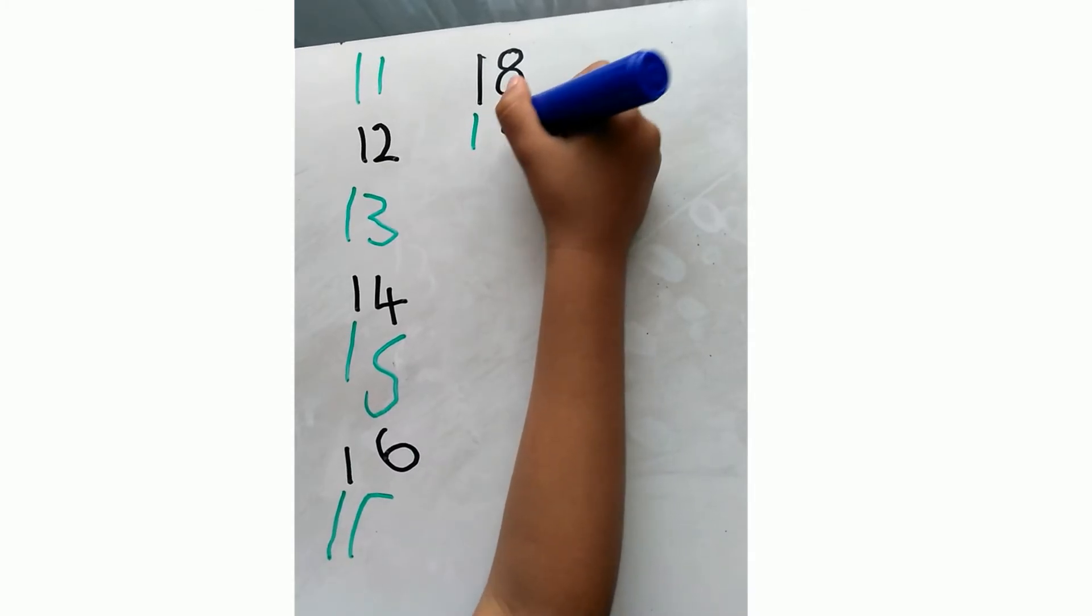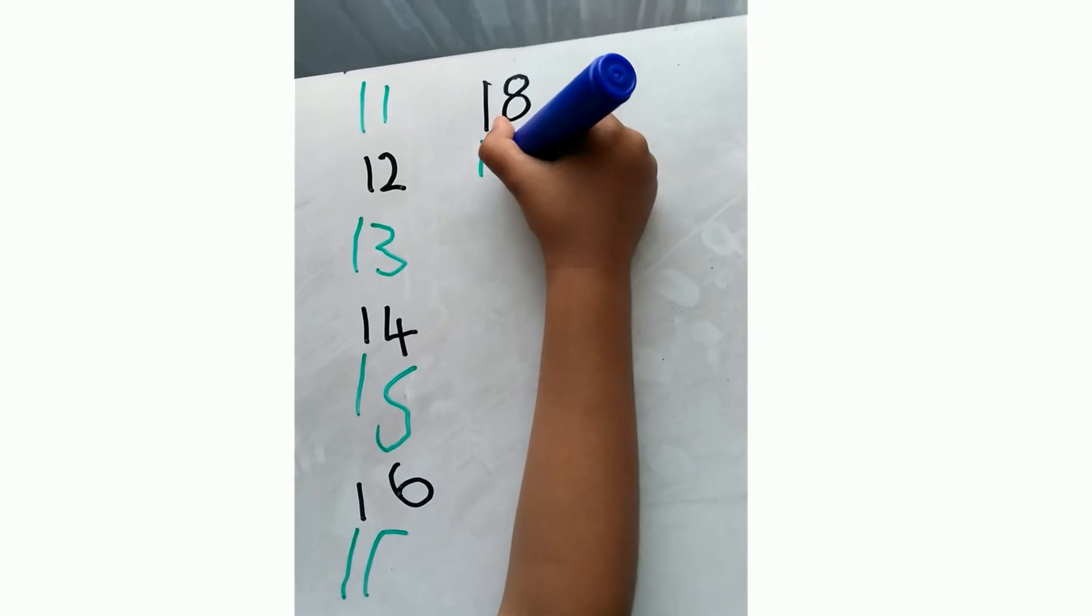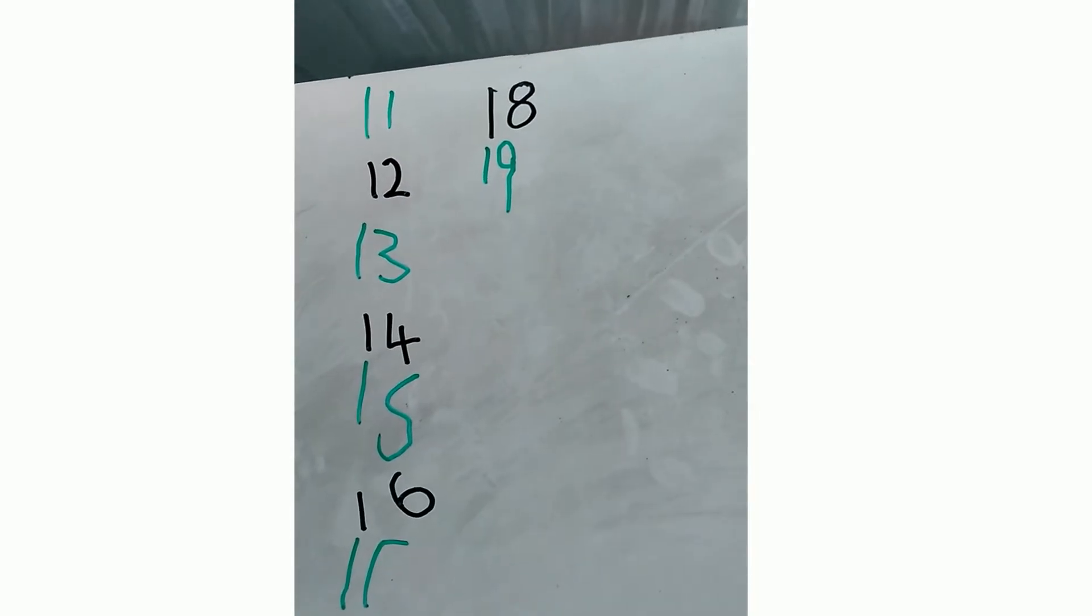What number are you going to do now? One. One and nine. Nine. One and nine.